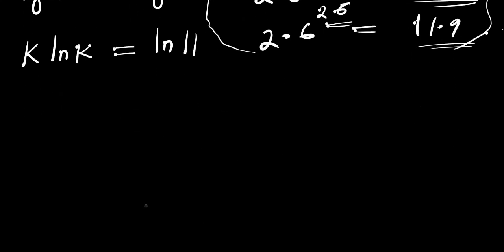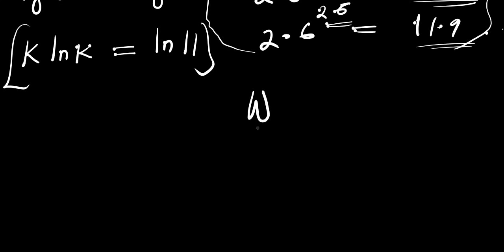Now that is not all — what do we do next in order to solve this kind of equation where k times ln of k equals ln of 11? There is a special function I want to introduce: it is called the Lambert W function. This function is denoted using W. If you take the Lambert W function of a function in the form a times e to the power of a, this will simply produce a.